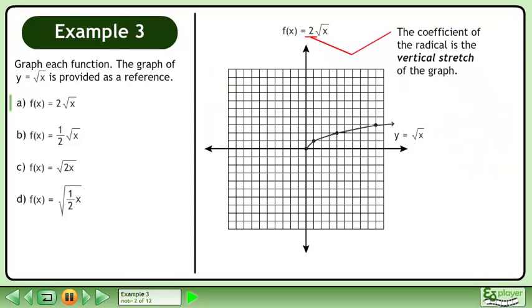The coefficient of the radical is the vertical stretch of the graph. Double the height of the graph to draw f equals 2 times the square root of x.